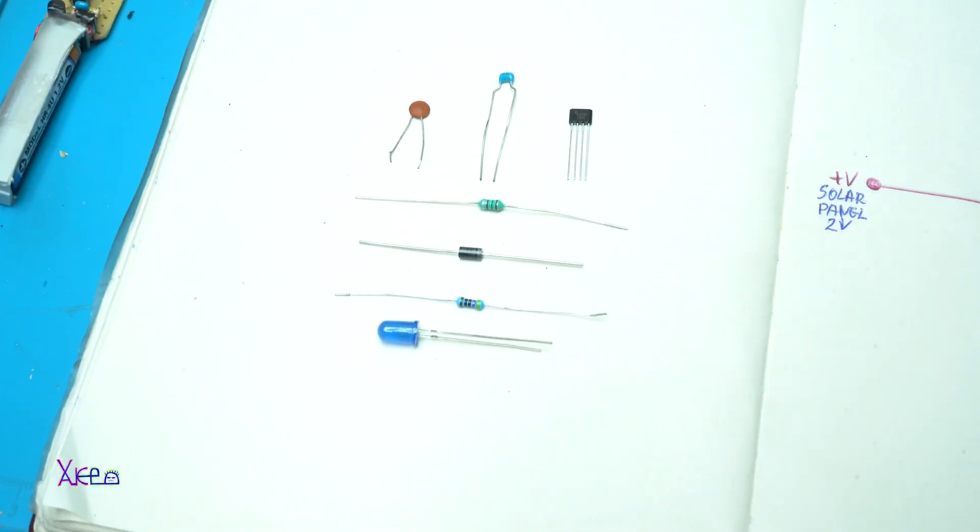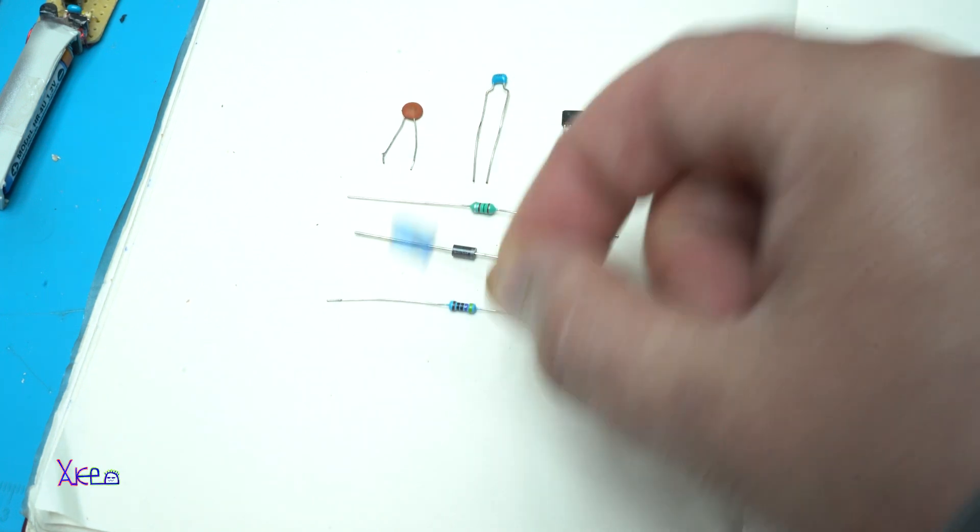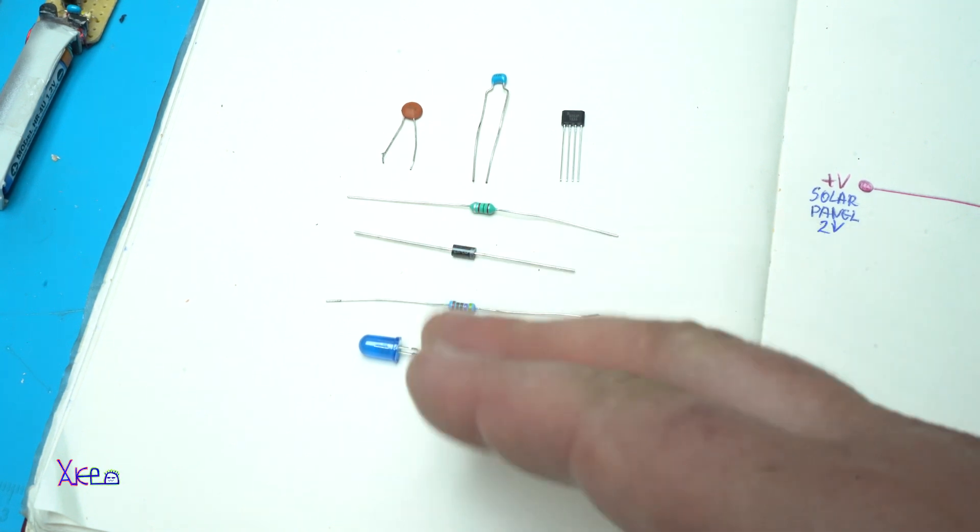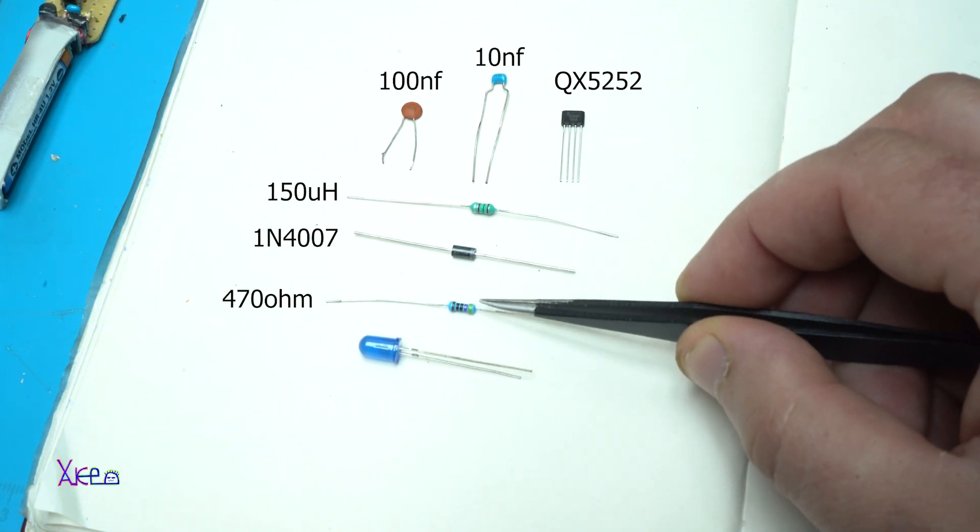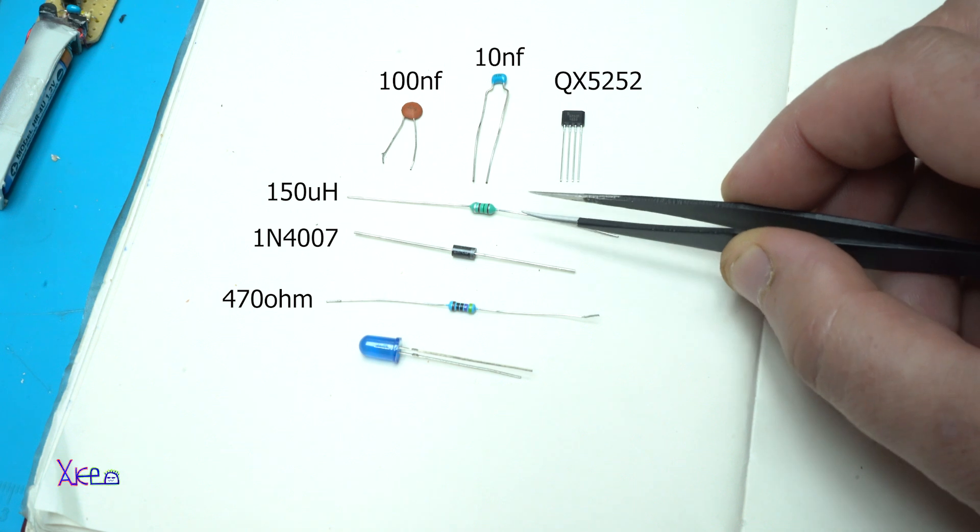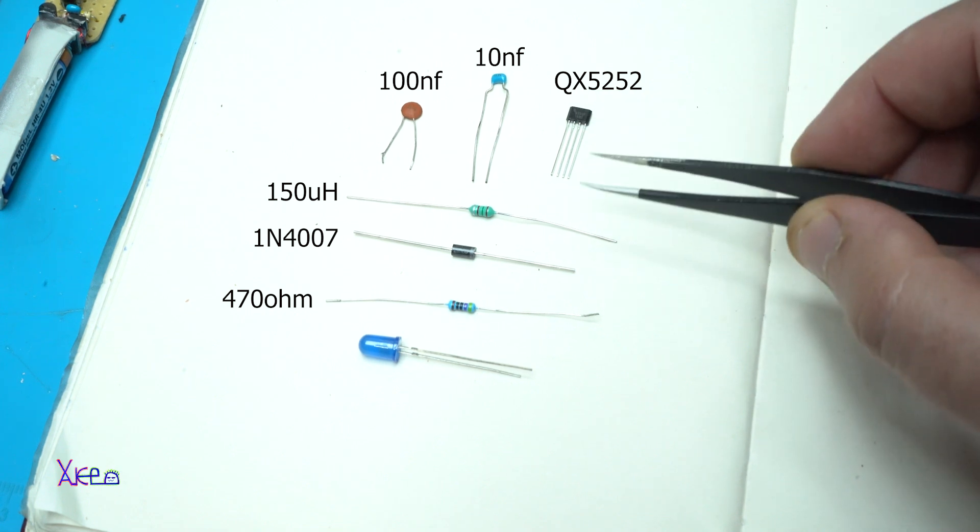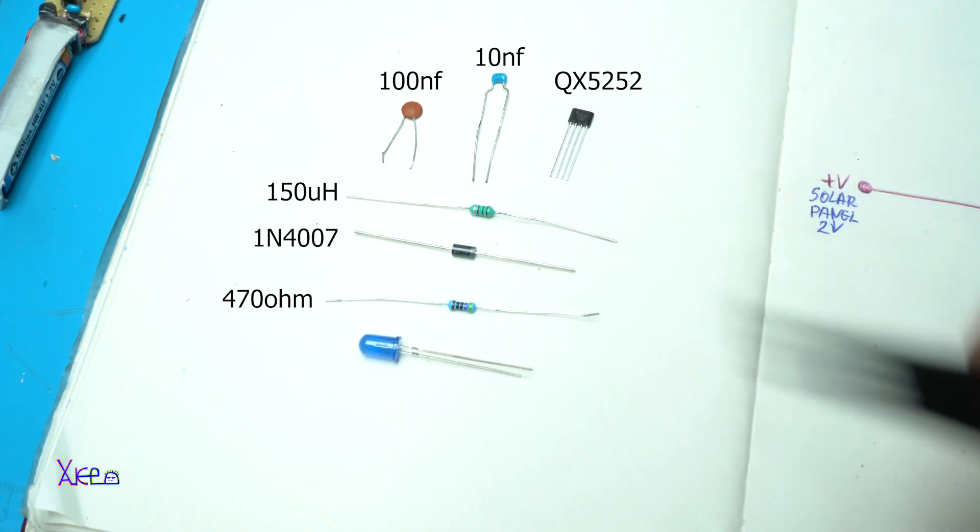I have made a new circuit for my blinking LED because the circuit that comes with ordinary solar garden lights will not work with the LED blink type. So I needed to modify and add a few components: a 470 ohm resistor, one 4007 diode, a 150 millihenry inductor, the integrated chip 5252, two 10 nanofarad capacitors, and a 100 nanofarad capacitor.